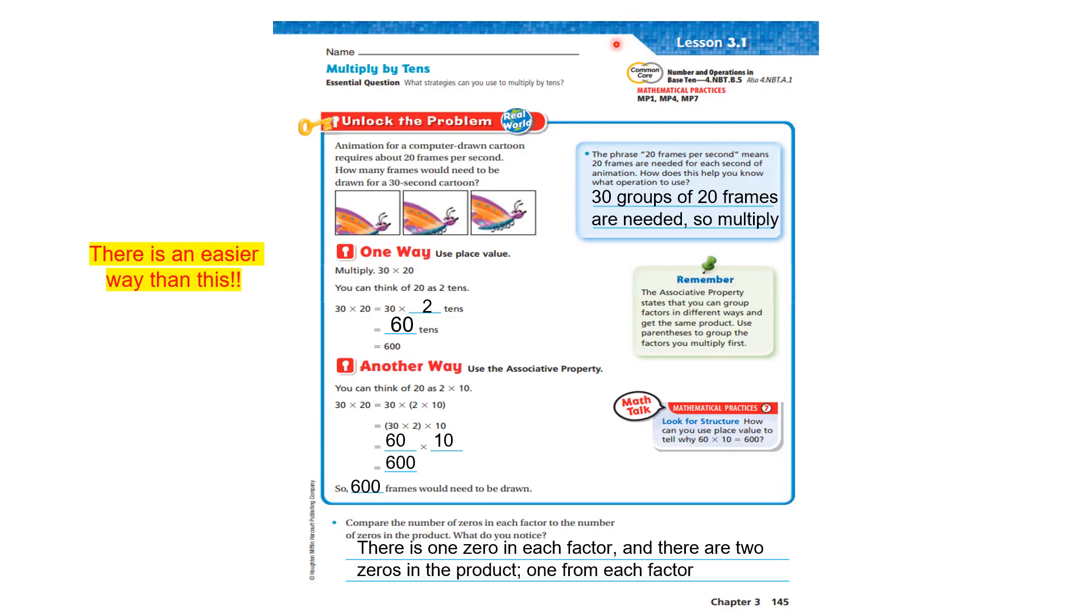Let's get going with lesson 3.1, multiply by tens. Our essential question is, what strategies can you use to multiply by tens? Well, boys and girls, right here I'm going to show you the place value and the associative property to multiply by tens, but there is an easier way.